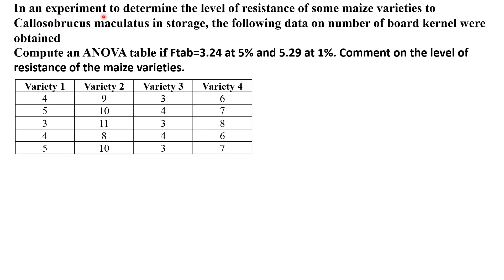In an experiment to determine the level of resistance of some maize varieties to Carlosobrocus maculatus in storage, the following data on the numbers of broad kernel were obtained. Compute an ANOVA table if F tabulated is 3.24 at 5% and 5.29 at 1%. Also comment on the level of resistance of these maize varieties.